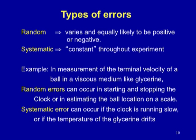Errors can be divided into two types: random and systematic. A random error varies and is equally likely to be positive or negative. A systematic error, on the other hand, remains throughout the experiment and has a particular trend — it can tend to be always positive or always negative. It is in this sense that 'constant' is used, so it may be better to simply call them random and non-random errors, though traditionally the word 'systematic' is used.